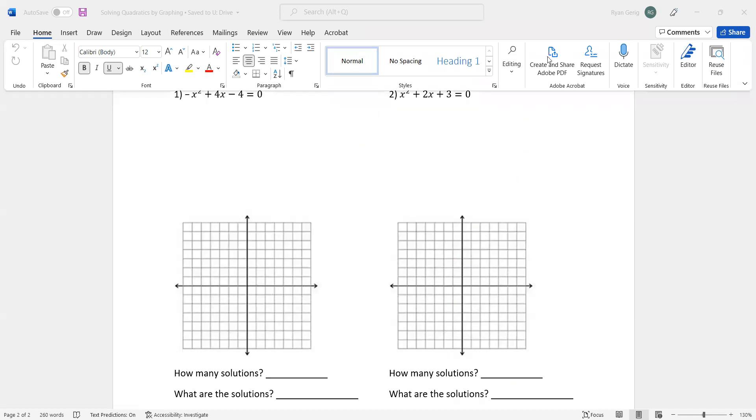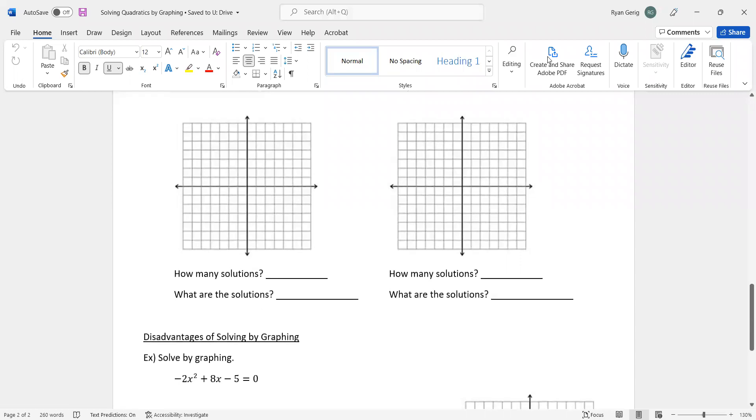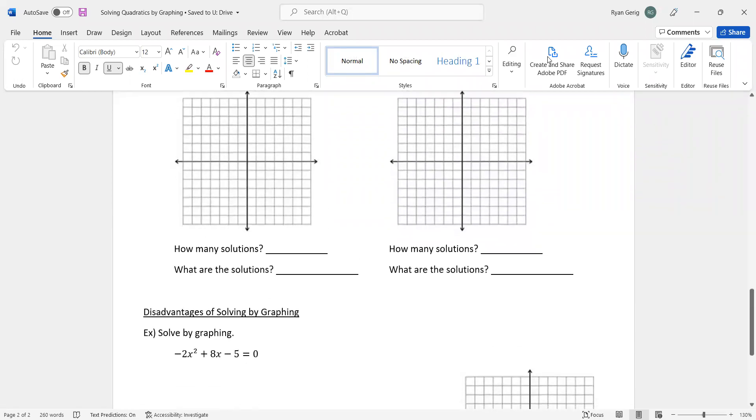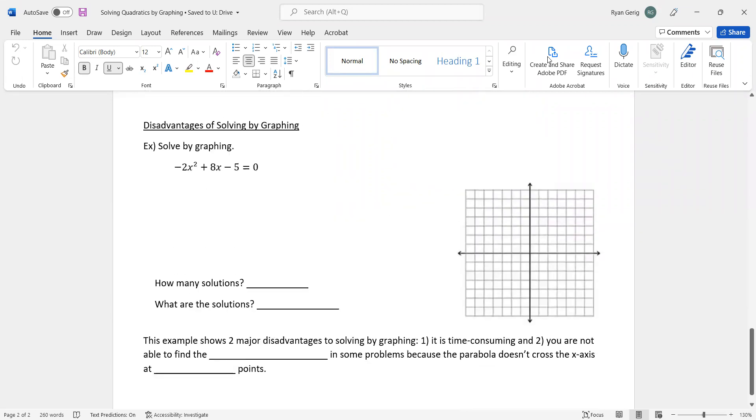So you've seen all three situations. The first one on the front page had two solutions. The two on the back here so far, one had one solution, and the other one had no solutions. Those are the three possibilities.